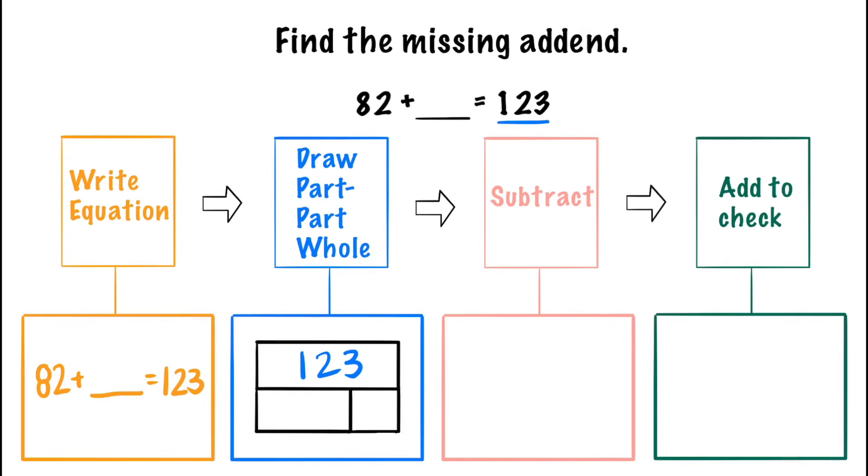The problem gives us one of the parts. We know one of them is 82 so we can go ahead and write that in. Now we need to find the other part that joined together with 82 would make a total of 123.